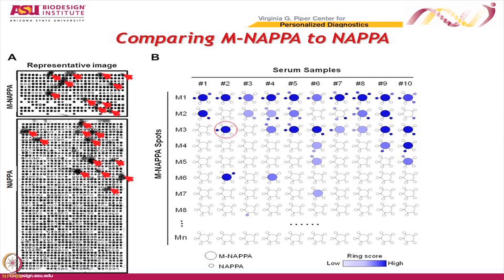Looking at this example, it's what you'd expect — a strong signal in the mixed spot and also a spot signal for one of the five proteins, which presumably gave that signal. Here's another example where we had a strong spot signal and two positives in that image. That's something to keep in mind: I've been assuming that within every mixed spot there's only one target, but it's certainly possible there may be more than one, and obviously you hope the mixed spot will give you that signal.